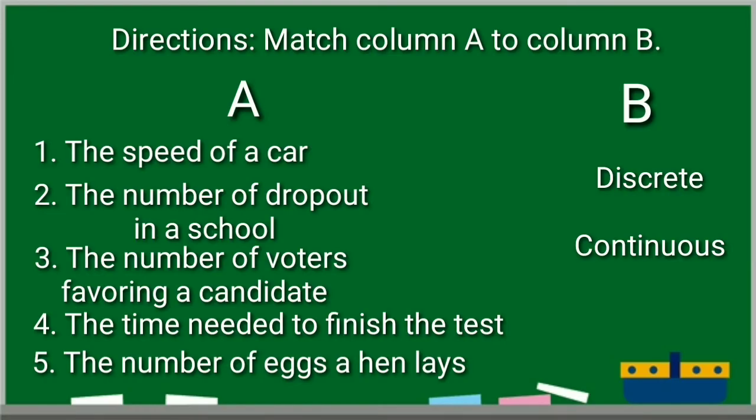Directions match column A to column B. Number one. The speed of a car. It talks about speed. The answer continuous. Number two. The number of dropout in a school. It is countable. So, the answer is discrete.